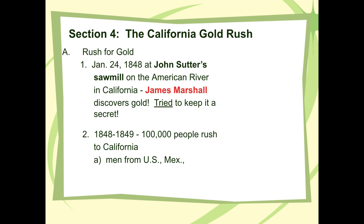Just in that one year period, 100,000 people rush into California. There's a reason why the football team in San Francisco is called the 49ers — because the gold rush of 1849 was really big. Men show up from all over the world, not just the United States. Mexicans, South Americans, Europeans, Asians — they come from everywhere because they want a shot at this gold.